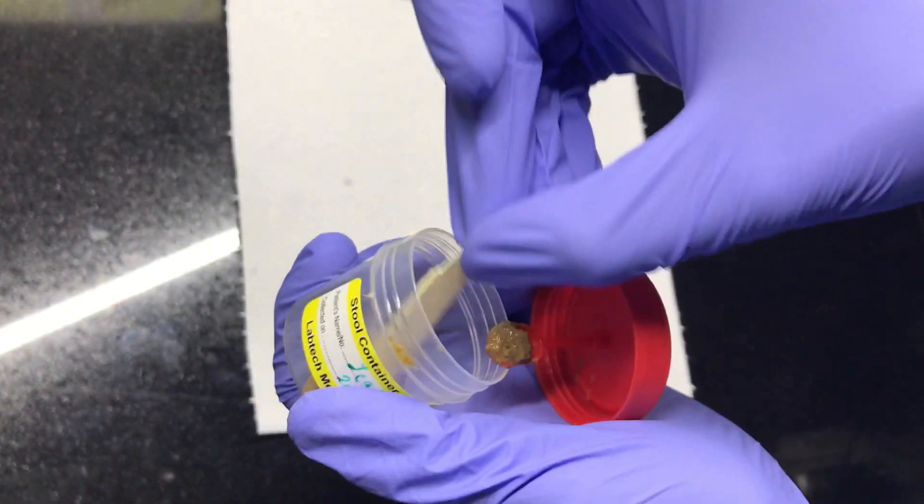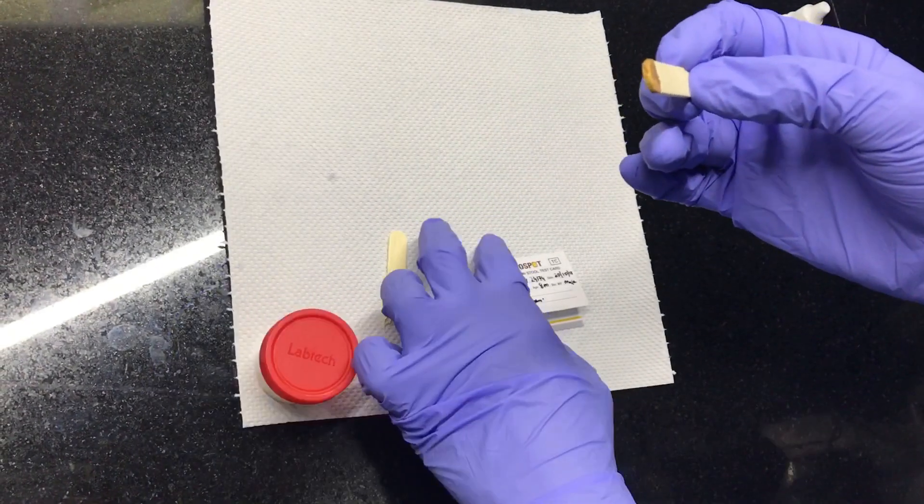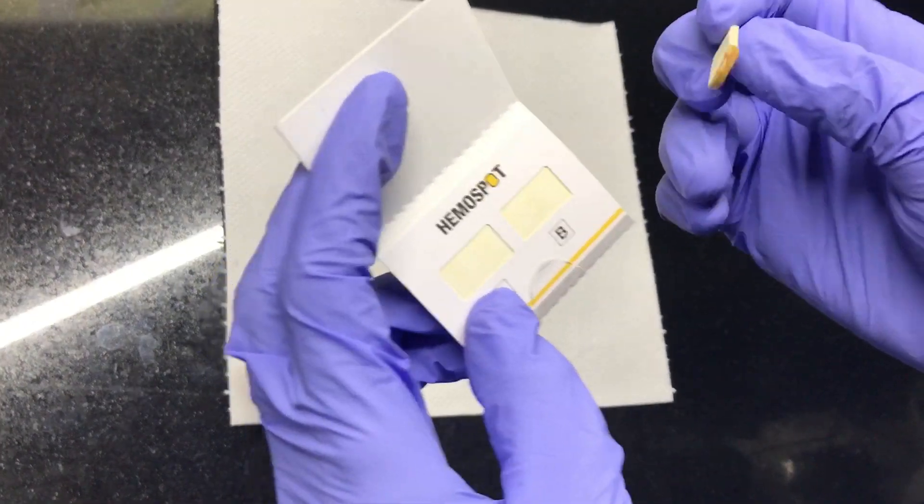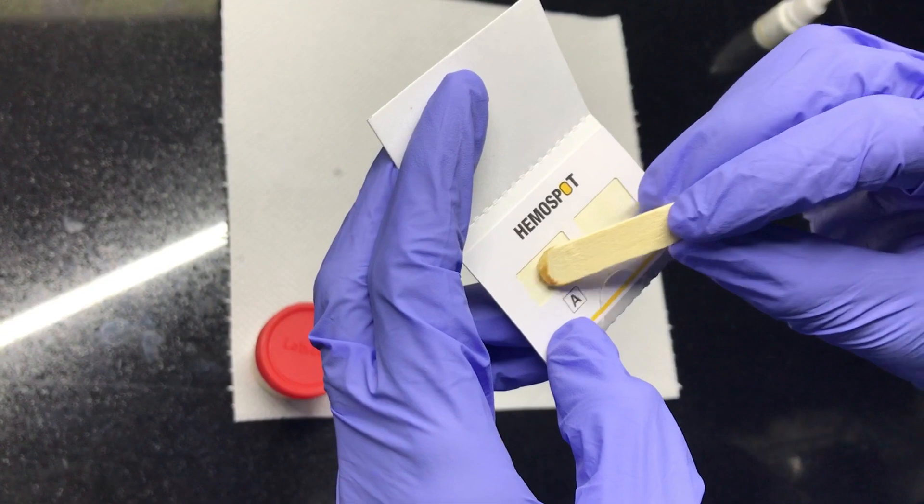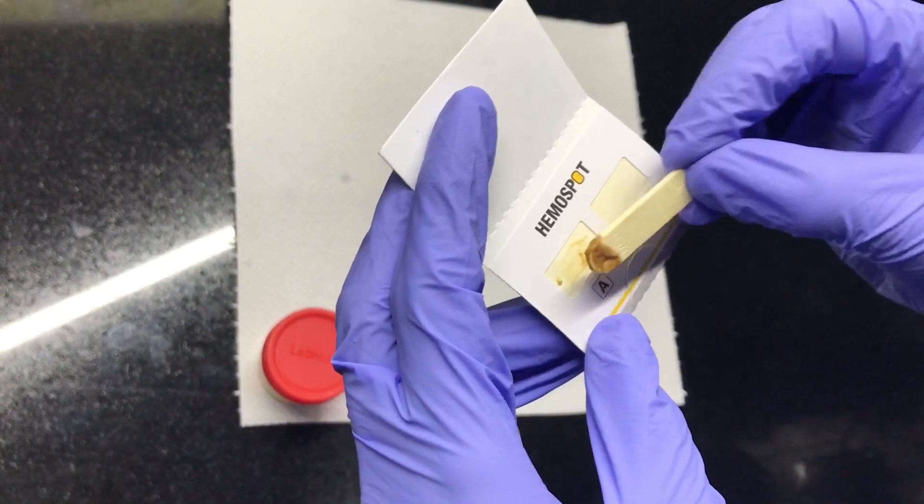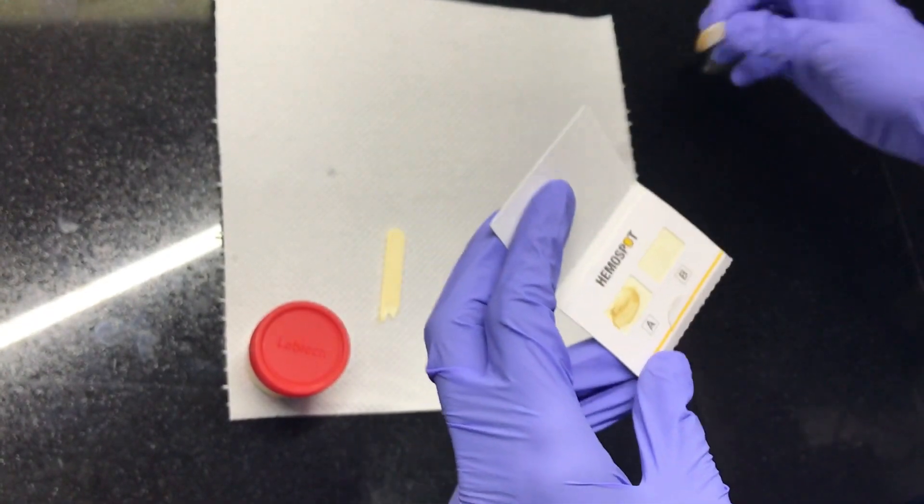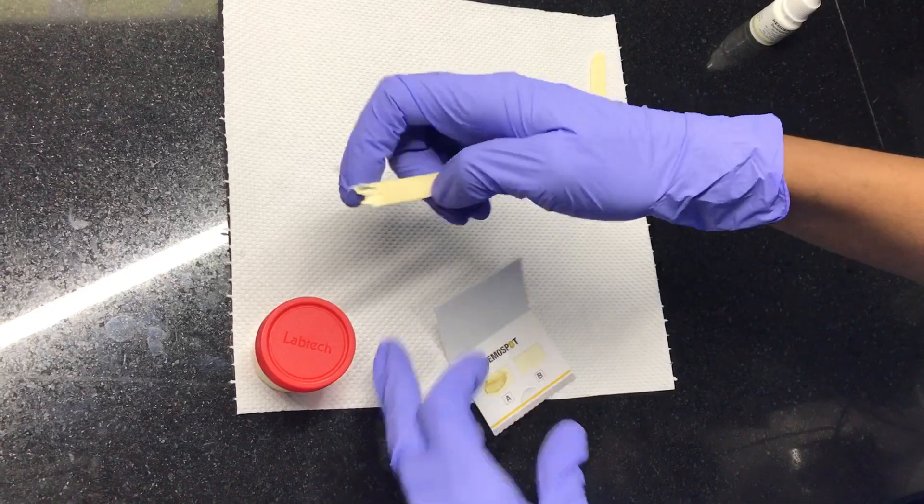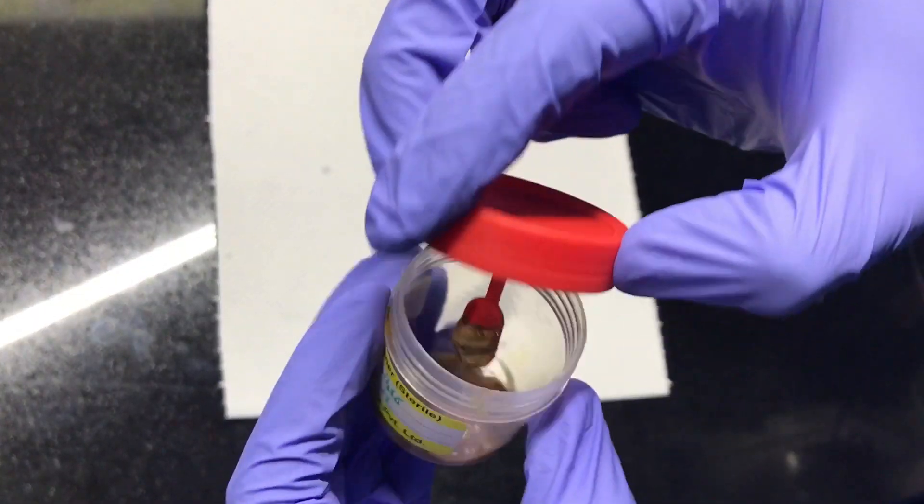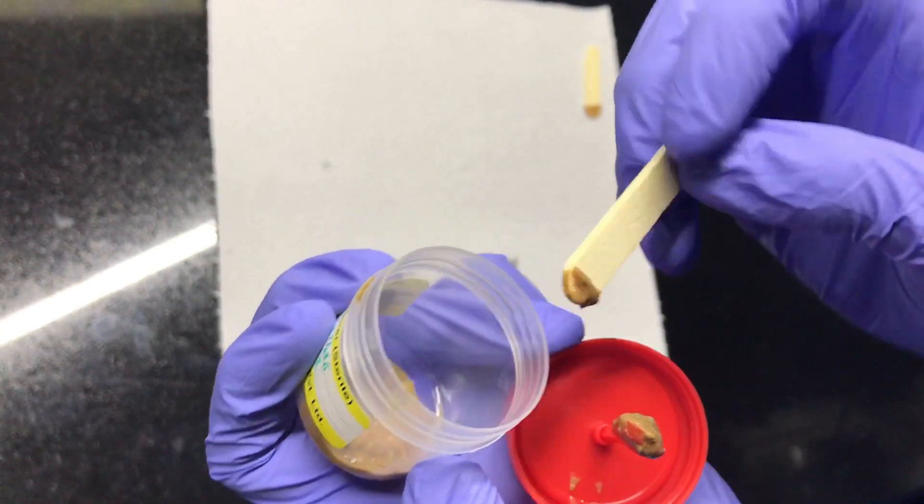Take a small amount of feces on the wooden stick and smear it on window A on the hemo spot card. Take another half of the wooden stick and repeat the same on window B on the hemo spot card.